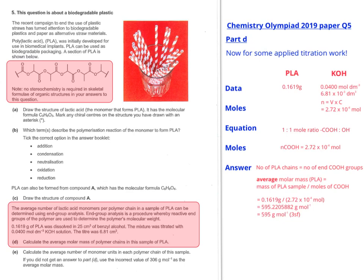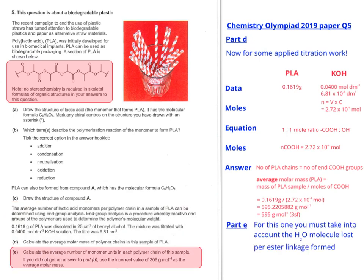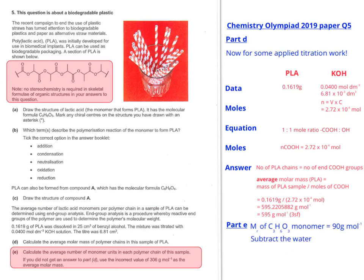So let's now go down to part D. So it tells you to calculate the average number of monomer units in each polymer chain of this sample. So for every monomer unit formed, you're going to have a water molecule that's produced, because obviously it's a polyester that's made. So the original monomer is going to be 90 grams per mole.